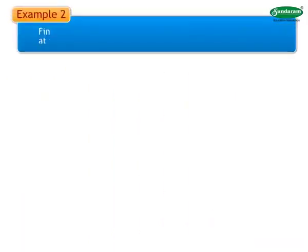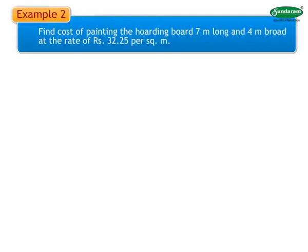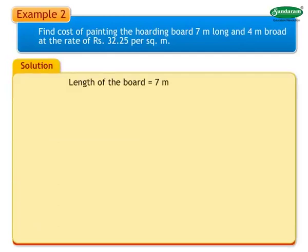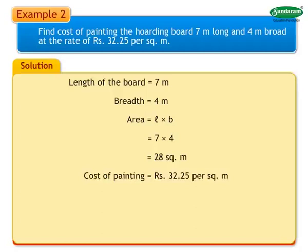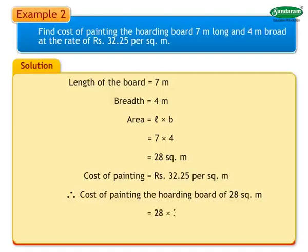Example 2: Find the cost of painting a hoarding board 7 meters long and 4 meters broad at the rate of Rs. 32.25 per square meter. Solution: Length is 7 meters, breadth is 4 meters. Area equals 7 into 4 equals 28 square meters. Cost of painting equals 28 into 32.25 equals Rs. 903.